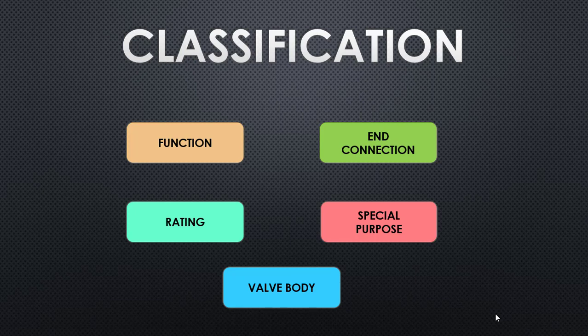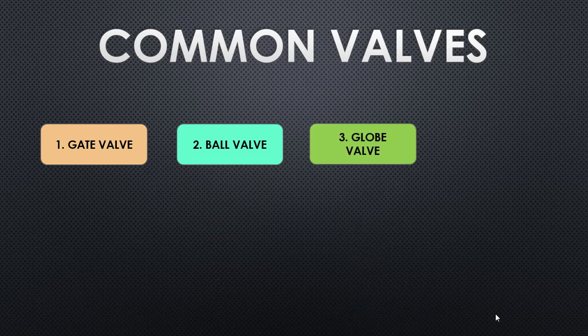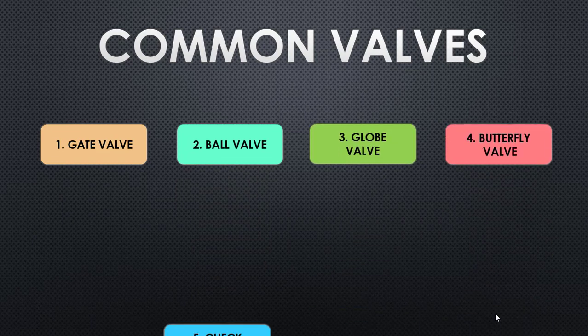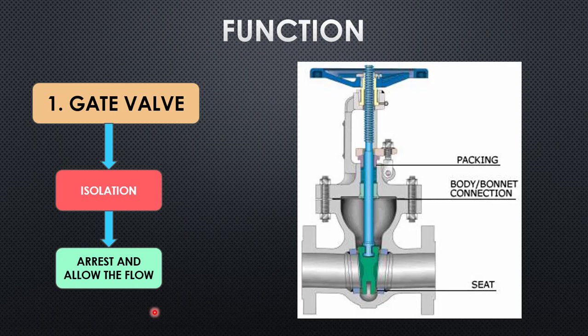We are not going to discuss all these classifications, because if you go through all of them you'll end up with too many valves. In reality, if you check process piping design, you will only see six major types of valves repeatedly used. So instead of focusing on rare valve types, we'll focus on those six: gate valve, ball valve, globe valve, butterfly valve, check valve, and relief valve.